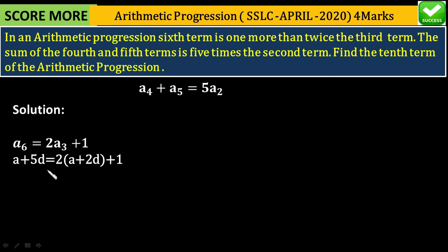Shift 4d to the left side and a to the right side. We get 5d minus 4d equals 2a minus a. So d equals a, then shift 1 to the right side: d equals a plus 1. Let this be equation 1.